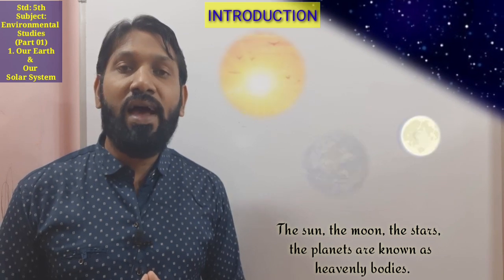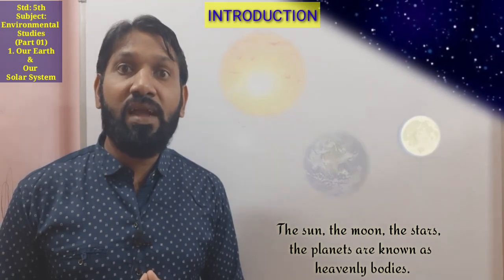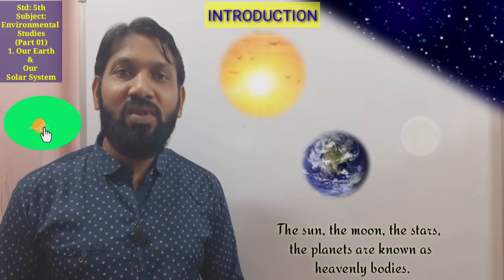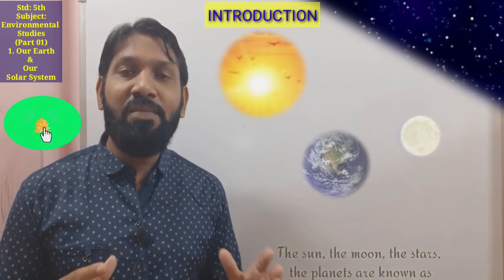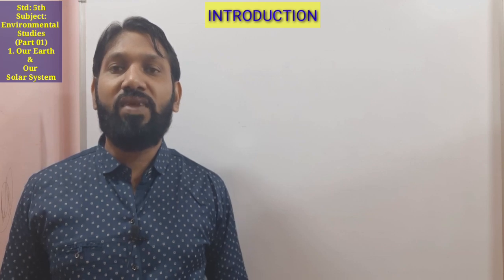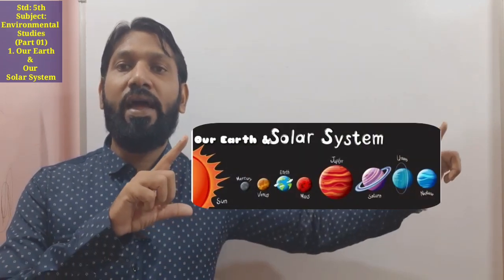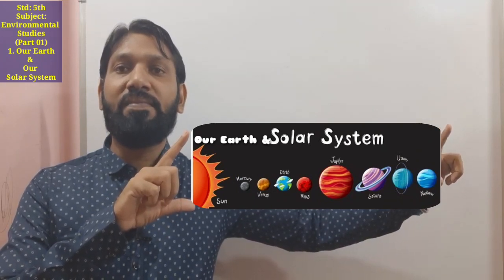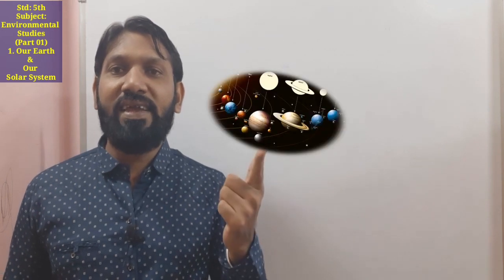Heavenly bodies are related to the universe and the sky. These are also called astronomical bodies. Today we are going to learn about these heavenly bodies — the first chapter of EVS fifth standard, that is 'Our Earth and Our Solar System.'